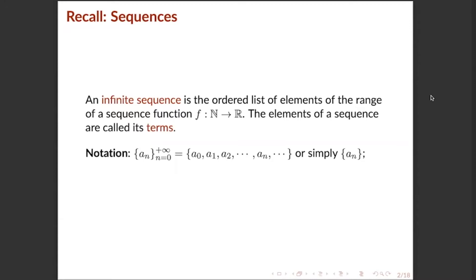Another notation: for any k in the set of all natural numbers, the set {a_n} from n = k to positive infinity, which equals the set whose elements are a_k, a_{k+1}, a_{k+2}, and so on.